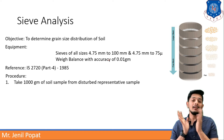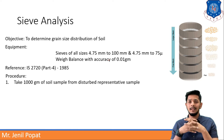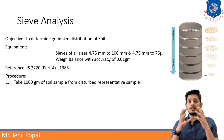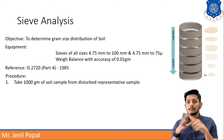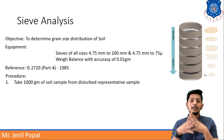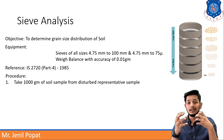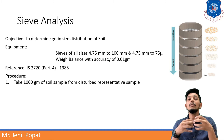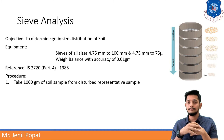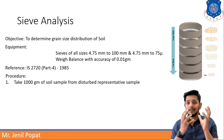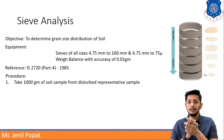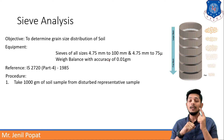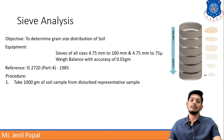Disturbed sample is when you disturb the soil structure — like you dig and remove the soil, that is a disturbed sample. Undisturbed sample is when, without disturbing any soil structure, you cut the core of that, and that will give you the undisturbed soil sample. We will take a normal dig or disturbed sample here for sieve analysis, but the base would be 1000 grams of soil sample.